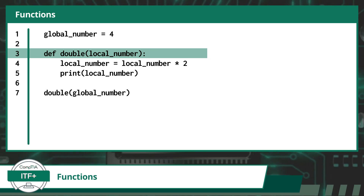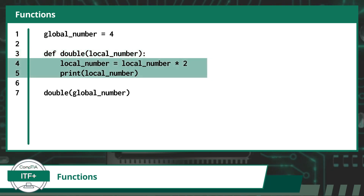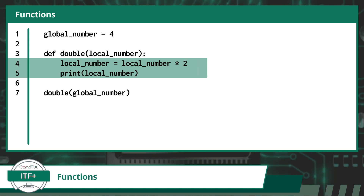Inside the parentheses, we have a parameter. In the context of a function, a parameter is a variable that is used to pass information into a function. Here I have named our parameter local_number. On lines 4 and 5, we have two indented code statements — these are the lines of code that will execute when the function is called. Line 4 reassigns the variable local_number with the current value of local_number times 2. On line 5, we output the new value of the local_number variable.